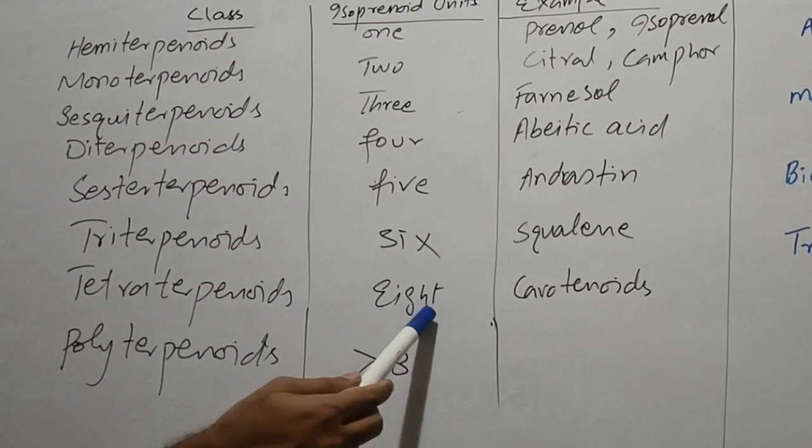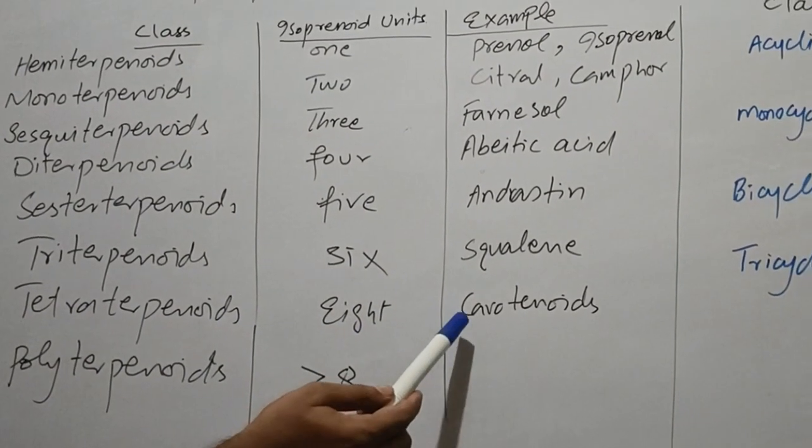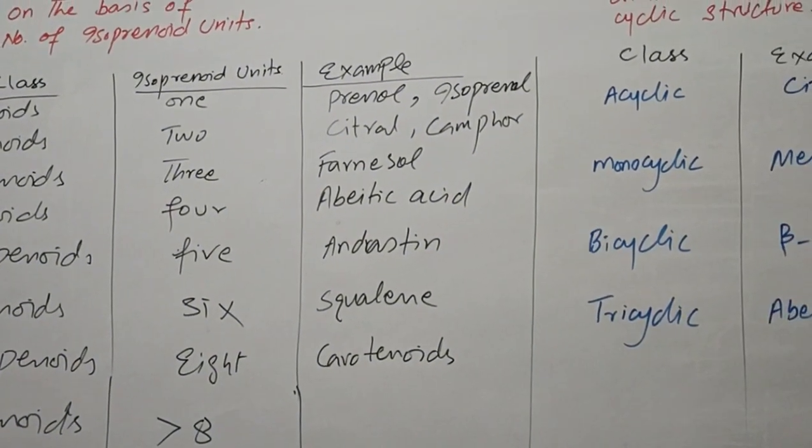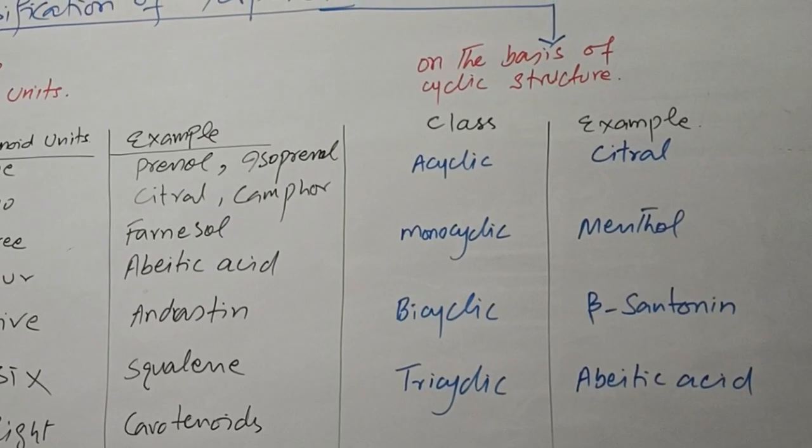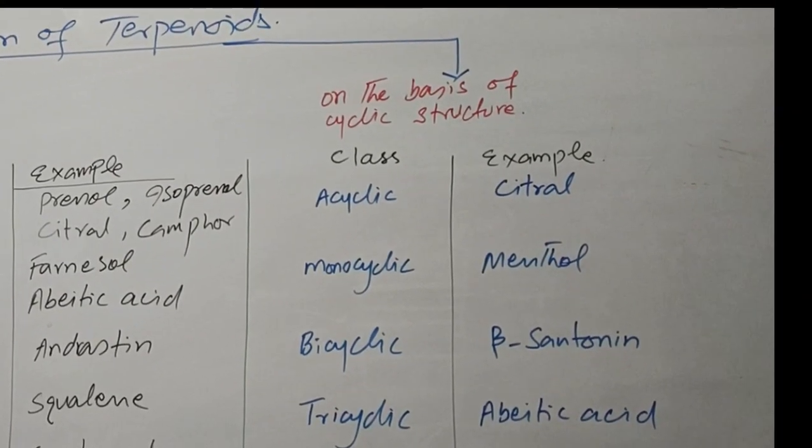Tetraterpenoid contain eight isoprenoid unit and they include carotenoids and if more than eight isoprenoid units are present then this class is called as polyterpenoids.